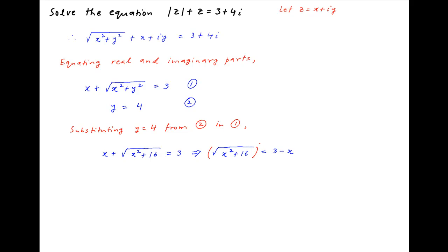Now take the square of both sides. We get x squared plus 16 is equal to 9 minus 6x plus x squared. x squared cancels across the left-hand side and the right-hand side, giving us 6x is equal to minus 7, which implies that x is equal to minus 7 upon 6.